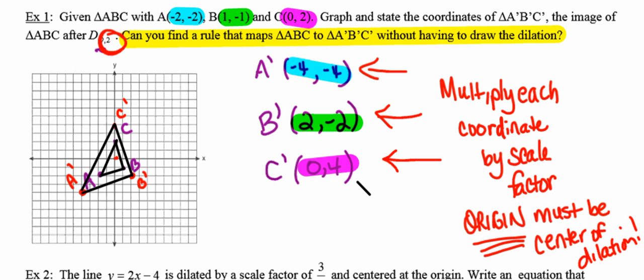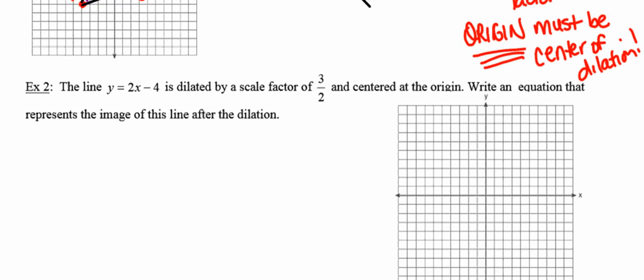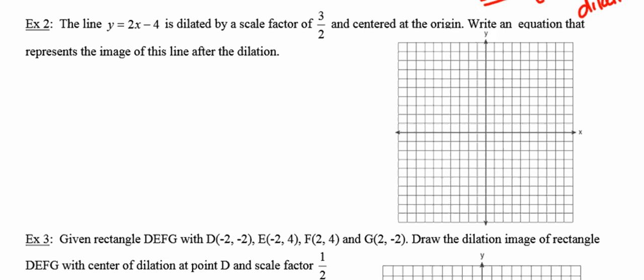Let's take a look at number 2. Number 2 gives us the equation of a line, and it wants us to dilate that using a scale factor of 3/2 centered at the origin. And they want us to write the equation that represents the image of this line after the dilation.